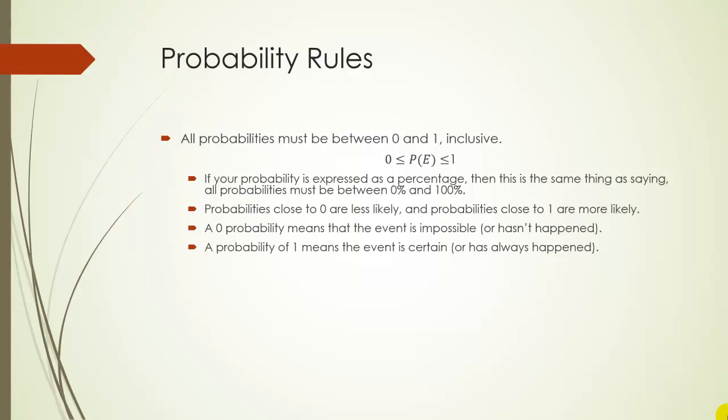A probability of zero means that the event is impossible, or if we're talking about empirical probabilities, it just hasn't happened. A probability of one means that the event is certain to happen, or if we're talking again about empirical probabilities, it just means it's always happened.